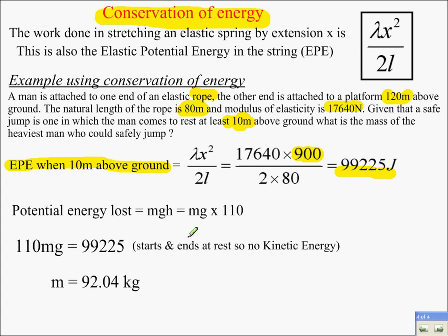30 squared is 900. So we substitute everything in here and we get an energy of 99,225. So that's the elastic potential energy in the rope when it's 10 meters above the ground. Now, the potential energy lost, mgh, is going to be this.